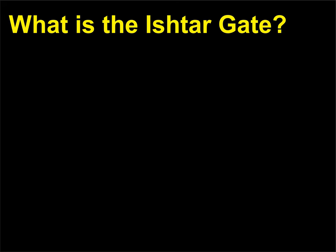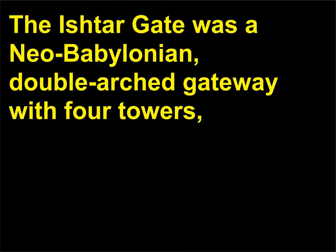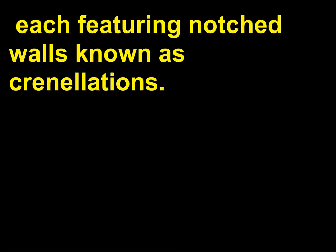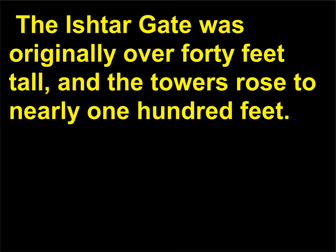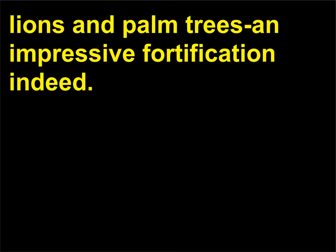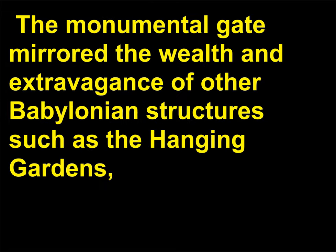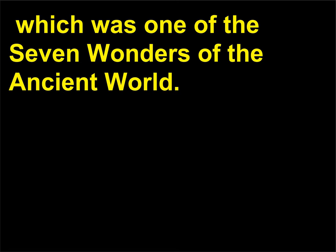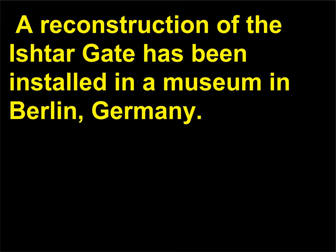What is the Ishtar Gate? The Ishtar Gate was a Neo-Babylonian double-arched gateway with four towers, each featuring notched walls known as crenellations. Originally over 40 feet tall, with towers rising to nearly 100 feet, the deep blue brick structure was decorated with stylized lions and palm trees — an impressive fortification indeed. The monumental gate mirrored the wealth and extravagance of other Babylonian structures such as the Hanging Gardens, one of the Seven Wonders of the Ancient World. A reconstruction of the Ishtar Gate has been installed in a museum in Berlin, Germany.